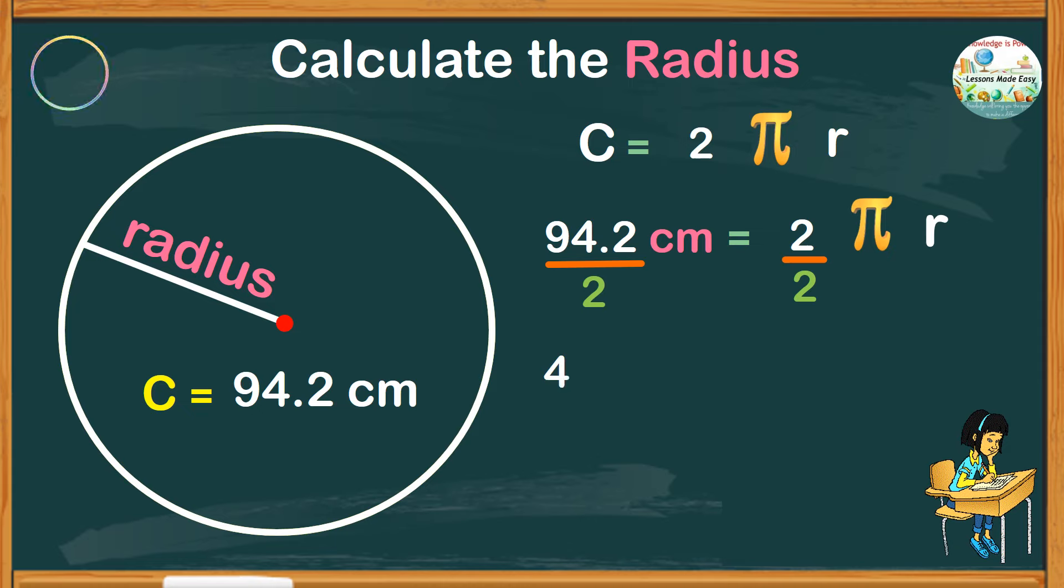So what's left of the circumference is 47.1, and on the other side is pi, which is 3.14 and r.